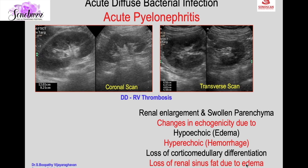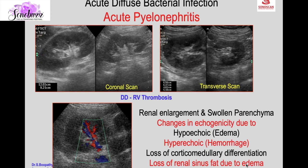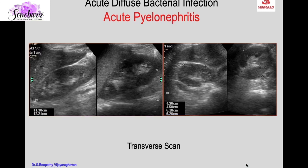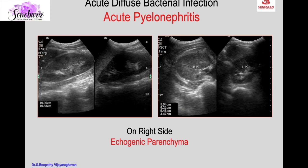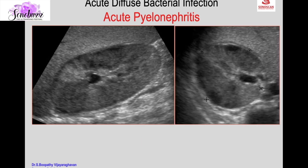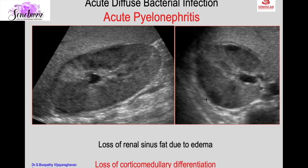The differential diagnosis is renal vein thrombosis, so a color Doppler will rule out renal vein thrombosis — renal vein flow is normal here. Swelling of the parenchyma is better appreciated in the transverse scan; the coronal scan may look almost normal whereas the transverse scan shows the swollen parenchyma. Echogenicity may be echopoor or echogenic, and along with clinical features we diagnose acute pyelonephritis. Swelling with compression of the central echogenic area and loss of corticomedullary differentiation are characteristic features.